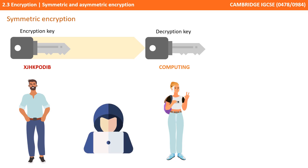However, with symmetric encryption, there is always the danger that a message can be cracked by either the interception of the key, or duplication of the key production process to generate a copy. Because of this, systems that send or receive sensitive information, like payment card details, use a far more secure method of encryption known as asymmetric encryption.